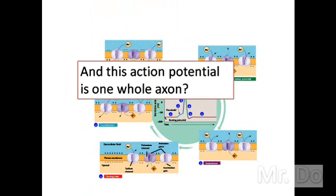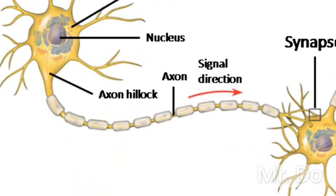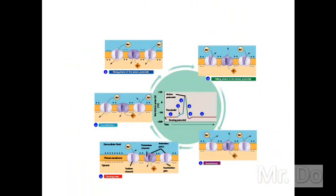The action potential does occur along the whole axon. But in terms of the graph that we're looking at, this graph shows an action potential generated at one point of the axon. And then when you move on to the next point of the axon, you have another same graph. So the graph is simply telling you that an action potential is generated, and then it relaxes, and it keeps repeating until it reaches the end of the axon.